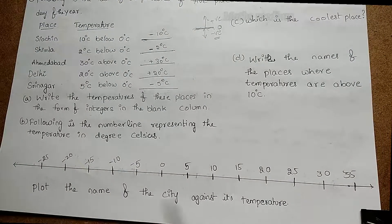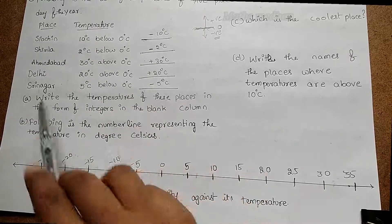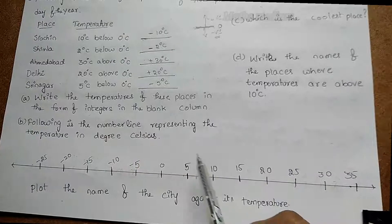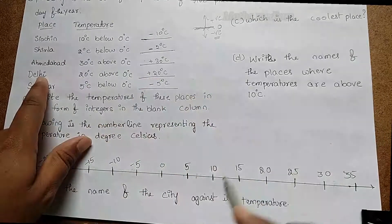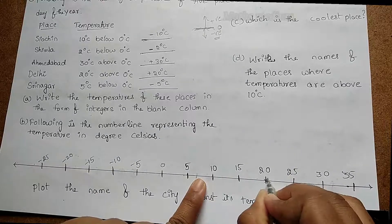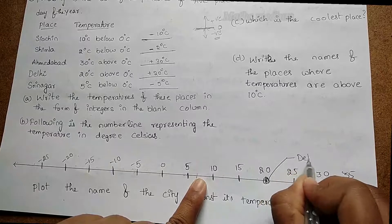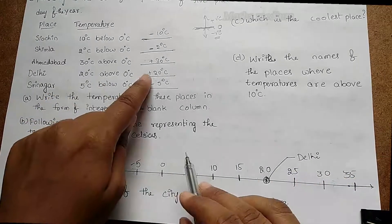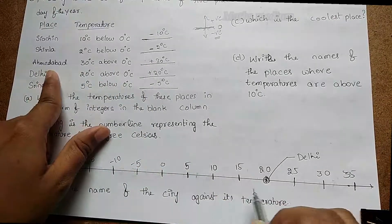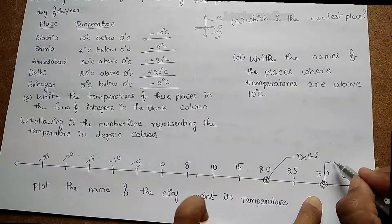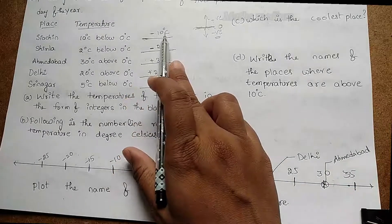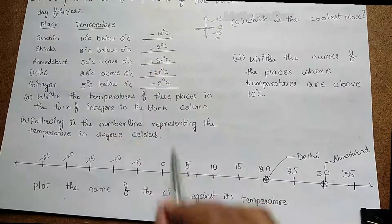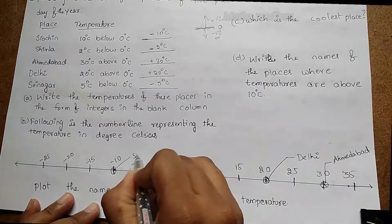Next, we have a number line and we need to plot the name of each city against its temperature. Let's start with the positive values: Delhi is +20, so counting 5, 10, 15, 20 — Delhi goes here. Ahmedabad is +30, so counting further to +30 — Ahmedabad goes here. Next, Siachen is −10°C, so minus 10 on the number line — Siachen is marked here.